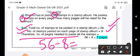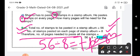You have to divide these two numbers and 56 divided by 8 will give us 7. That means 7 pages are required to stick 56 stamps if we are fixing 8 stamps on one page.